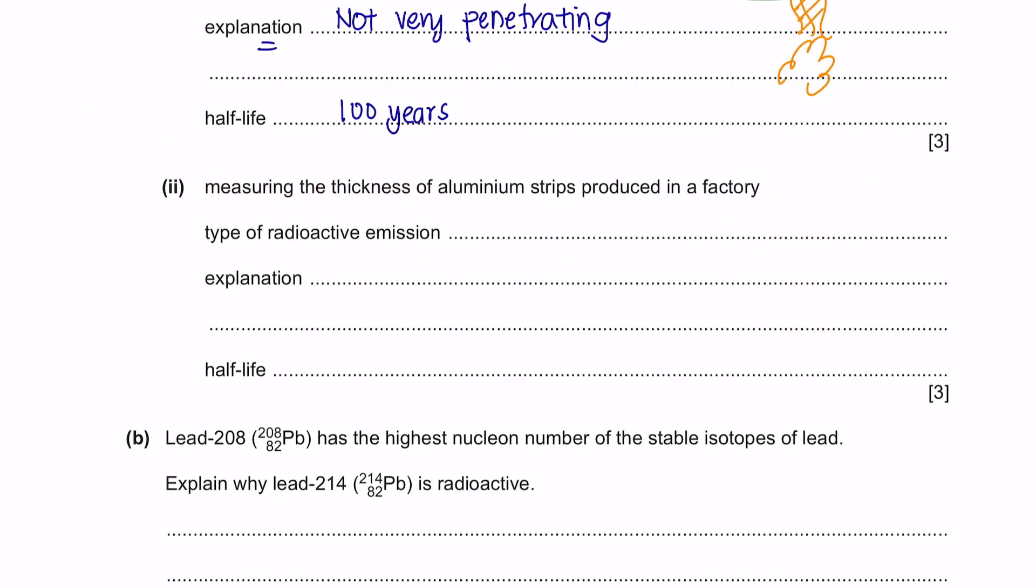Part 2, measuring the thickness of aluminum strips produced in a factory. Let's understand the principle. The idea is the same. You must have a continuous radioactive emission that will reach the sensor. A roller will push through the aluminum to go through the sensor. The sensor here is set for how much emission it should receive. If it's a little bit more or a little bit too less, that's when the sensor will start to beep. And you will know that the thickness here is not the right diameter.